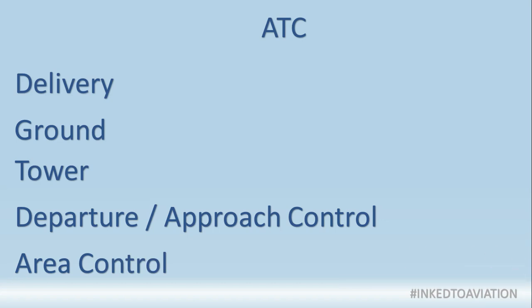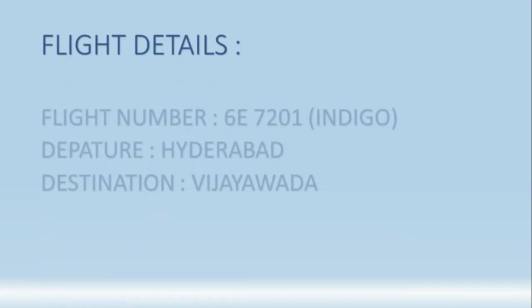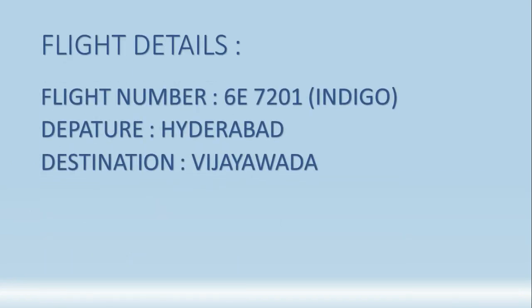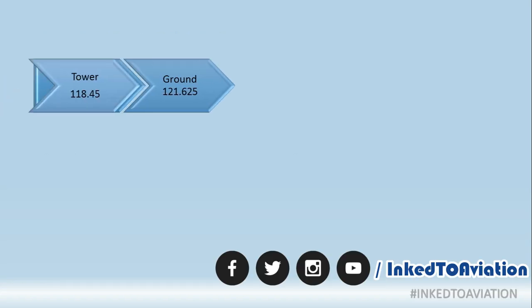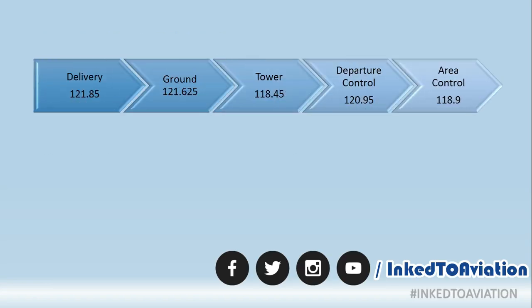Today's example is going to be 6C7201, an IndiGo flight — an ATR operating between Hyderabad and Vijayawada. It's a scheduled service seven days a week, departing at 6:20 AM from RGIA to Vijayawada. Once the flight is ready for departure, the captain or first officer will contact Shamshabad Delivery on 121.85 asking for clearance. Once clearance is obtained, Shamshabad Delivery passes them on to Shamshabad Ground.